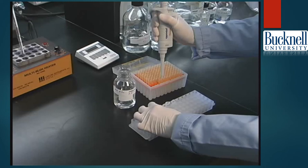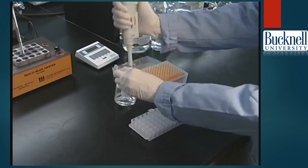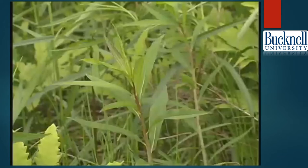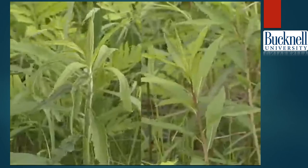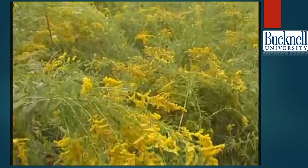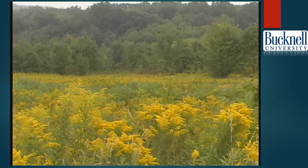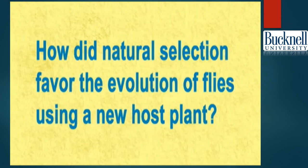DNA sequence analysis supports the conclusion that tall goldenrod gall flies are the ancestors of the closely related late goldenrod gall flies. Furthermore, these DNA studies suggest the host shift from tall goldenrod to late goldenrod originated in the northeastern United States. The fact that the host shift did not occur independently in the Midwest but spread there from the east suggests that the conditions needed for the host shift may not be common or occur in all places. This is an important lesson for conservation, since saving only part of a species' range may not allow the continued evolution of new species.